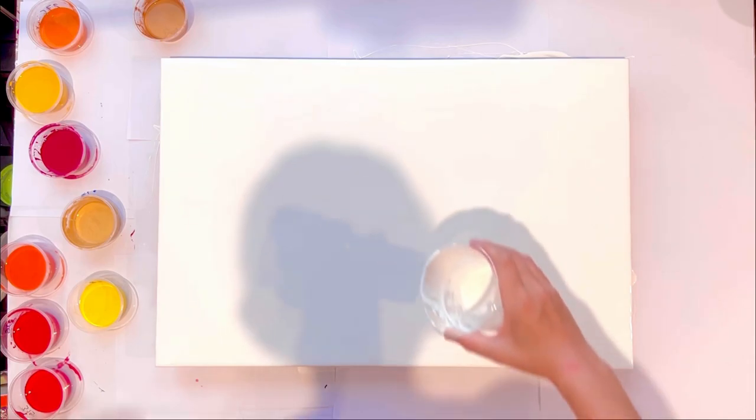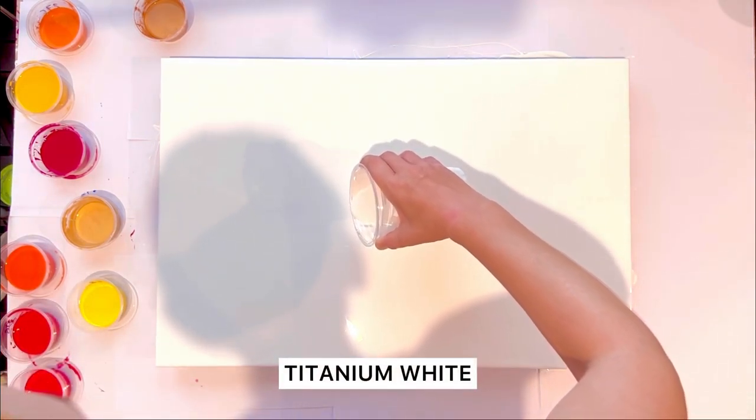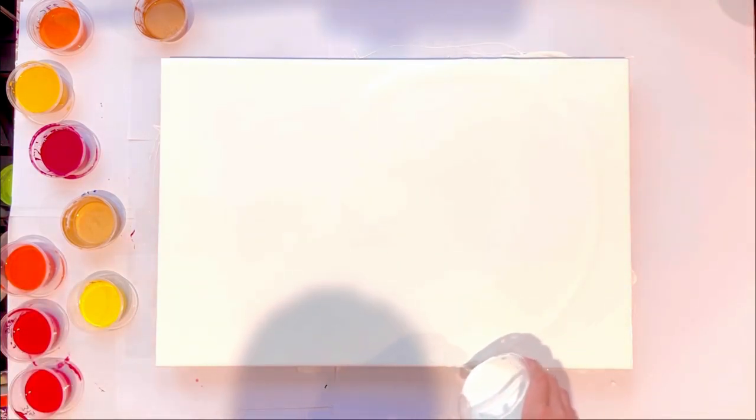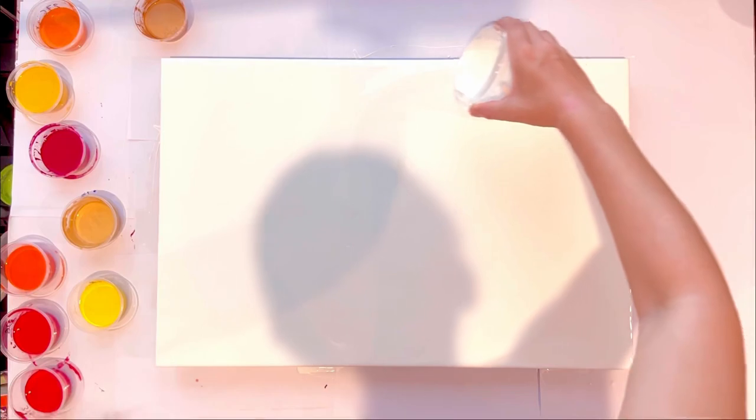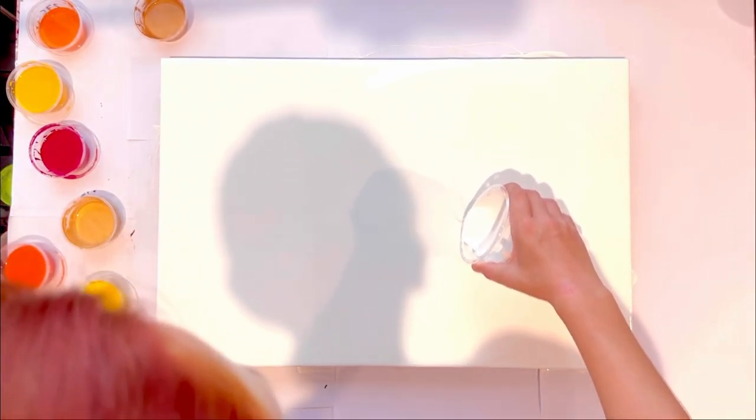Hi guys, welcome to my new acrylic pouring tutorial. Today I want to create a very vibrant sunny piece with two flows. I'm working on a quite large canvas, 24 by 16 inches, and the base color is titanium white. I'm planning the shape of the flows with the base color.